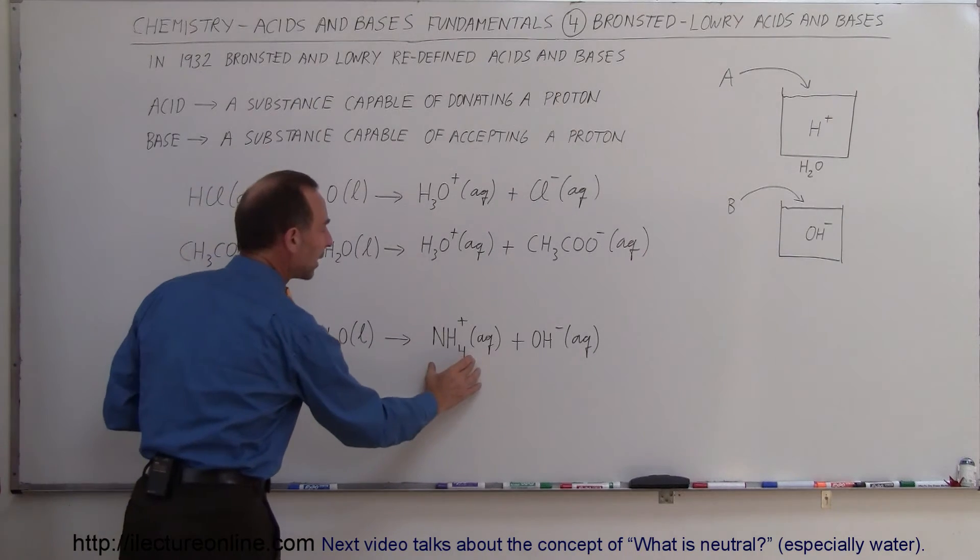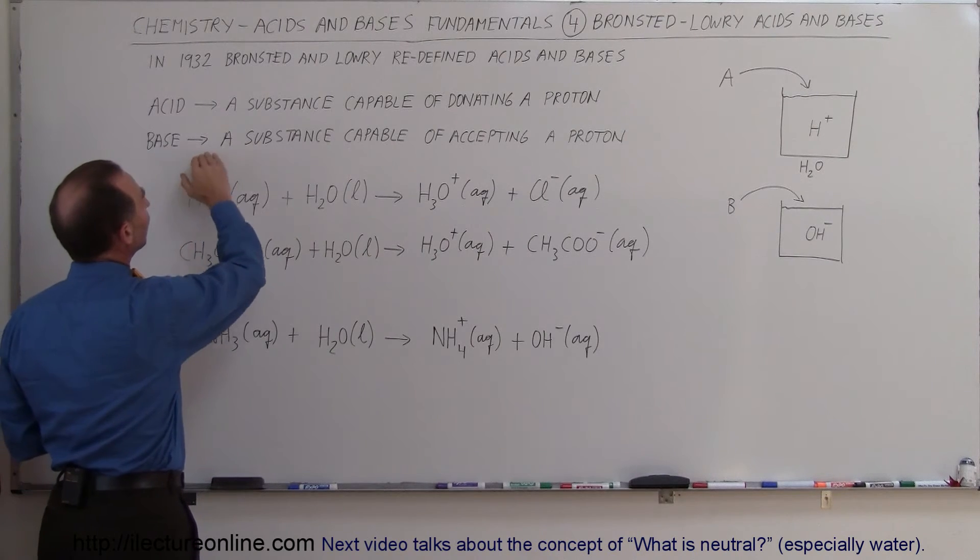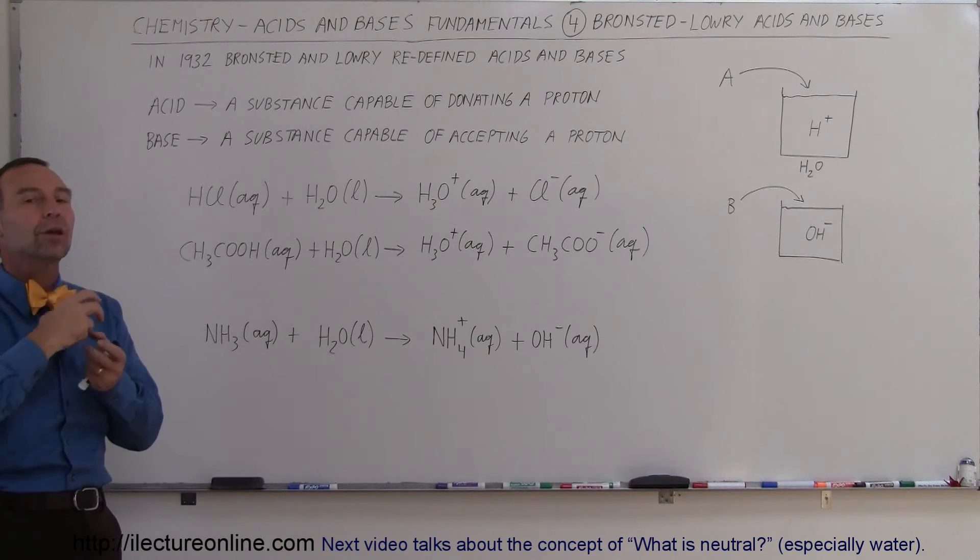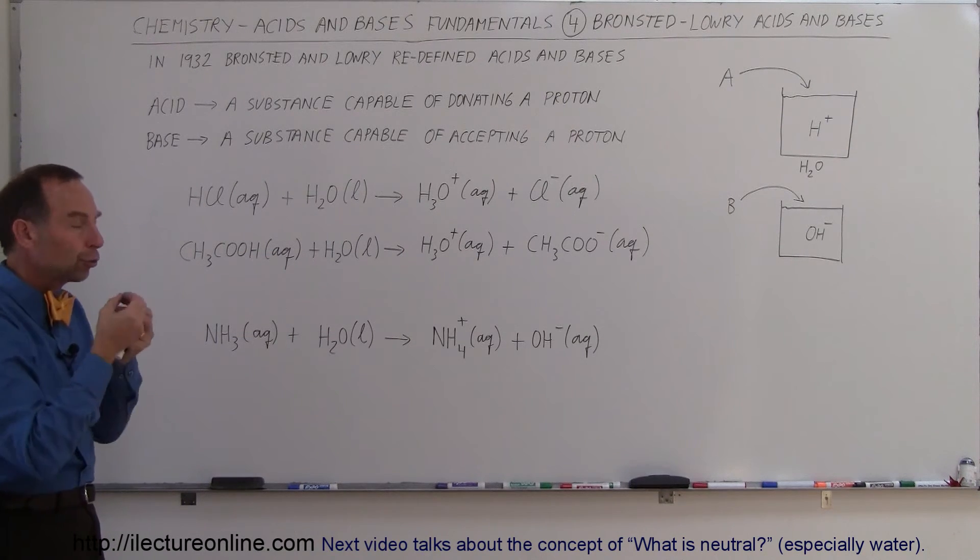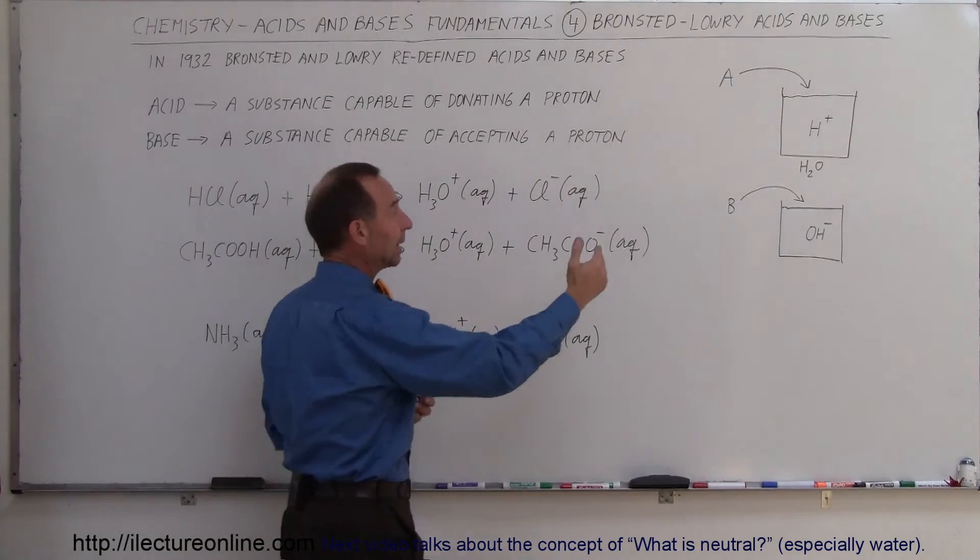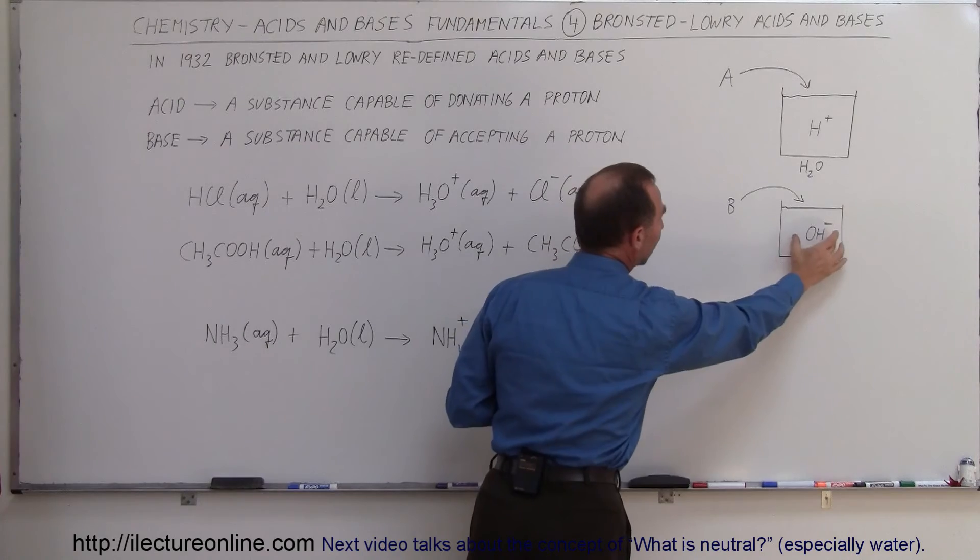So the definition for a base according to Bronsted and Lowry is that a substance is capable of accepting a proton. It's actually grabbing a proton away from the water and therefore turns the water molecule into a hydroxide ion OH-. By adding a Bronsted-Lowry base into the aqueous solution, you end up with an excess of hydroxide ions.